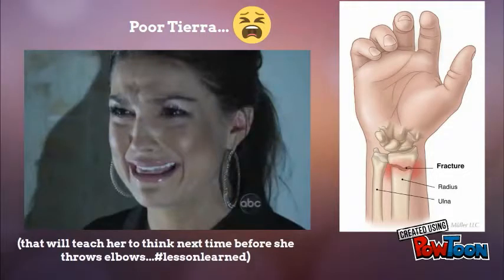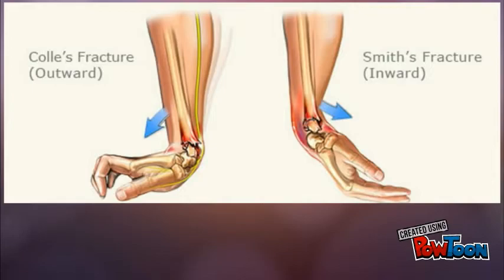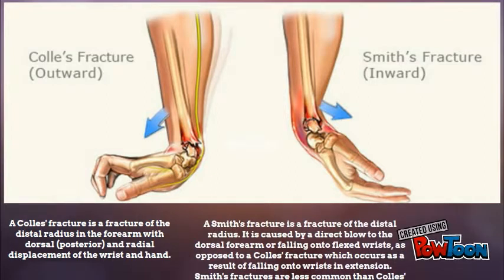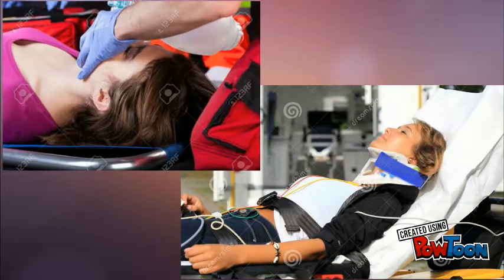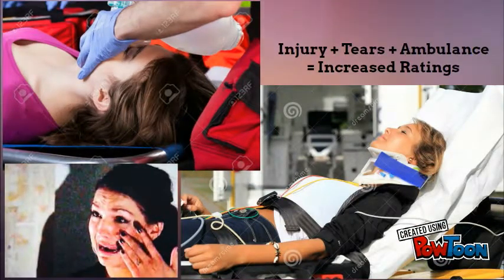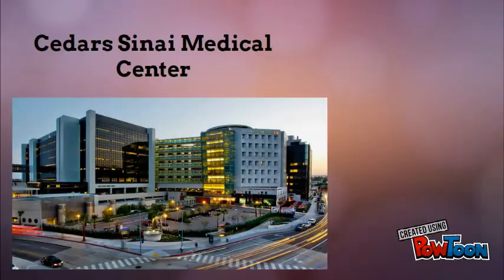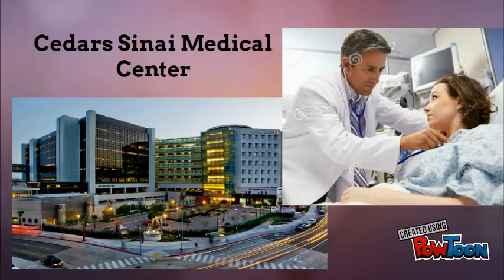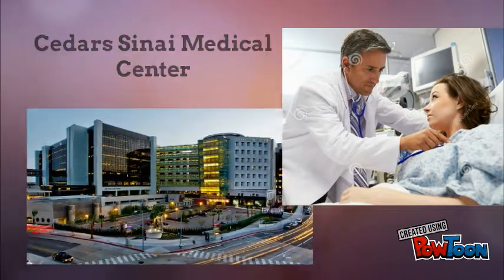Tiara ended up falling and breaking both of her wrists. She suffered a Colles' fracture in one wrist and a Smith's fracture in the other. She was put in a cervical collar, placed on a backboard, and taken to the hospital — anything for those reality TV ratings. When she arrived at Cedars-Sinai Medical Center, she was examined by the ER physician who ordered x-rays of her wrist.